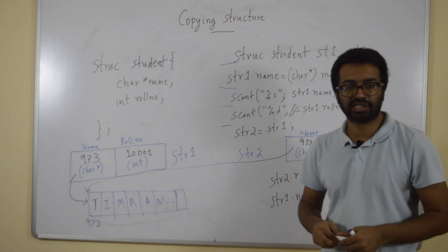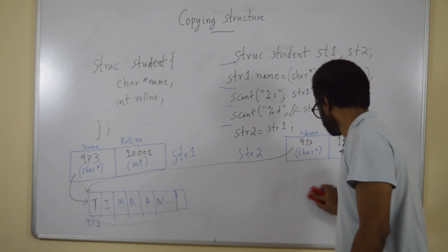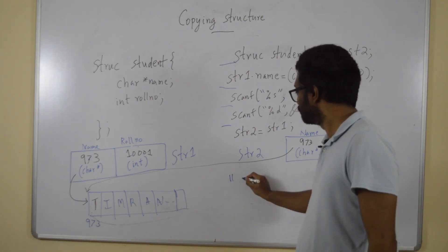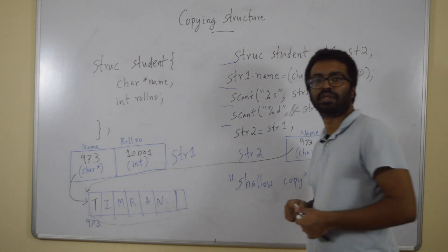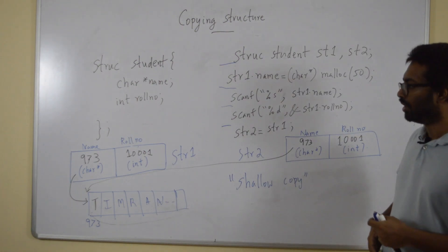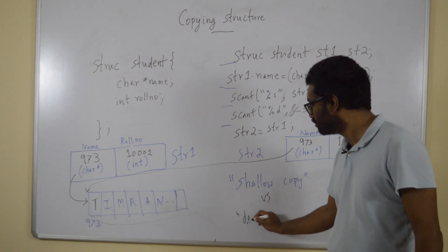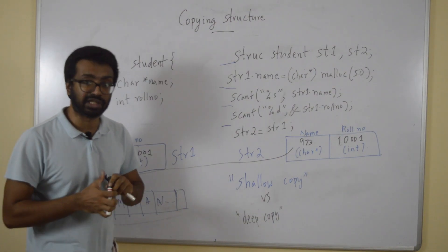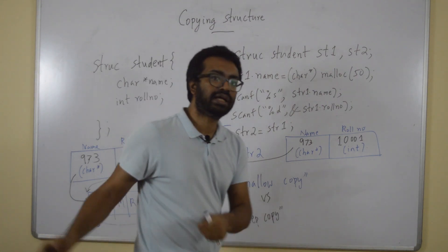In this case, only the address is copied — the block of memory which was allocated, the array, is not copied. This kind of copying is called a shallow copy, which means only the top layer of information is copied. It's not a deep copy. Along with shallow copy, there is another kind called deep copy.